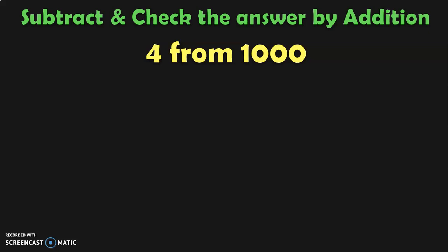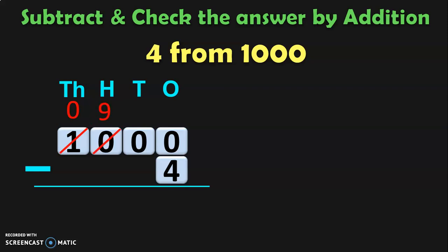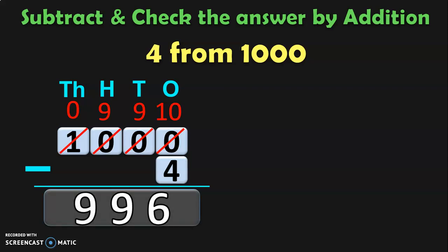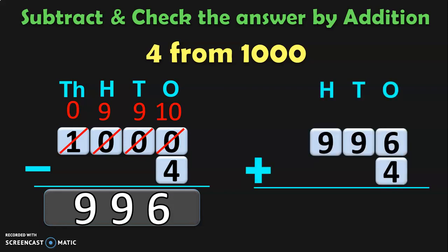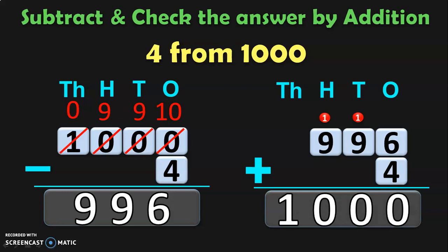Subtract and check the answer by addition: 4 from 1000. Write down 1000 with its place values and write 4 in the 1s place. The 1s, 10s, and 100s places have zeros, so go to the 1000s place, which has 1000. Regrouping: this becomes 0 thousands and 10 hundreds, then 9 hundreds and 10 tens, then 9 tens and 10 ones. 10 minus 4 in the 1s place is 6. The 9s in the 10s and 100s places are written down, and the 1000s place is 0. So 1000 minus 4 is 996. Adding 996 plus 4: 6 plus 4 is 10 — 0, carry 1; 9 plus 1 is 10 — 0, carry 1; 9 plus 1 is 10 — the 1 moves to the 1000s place, giving 1000. So your subtraction is perfectly right.